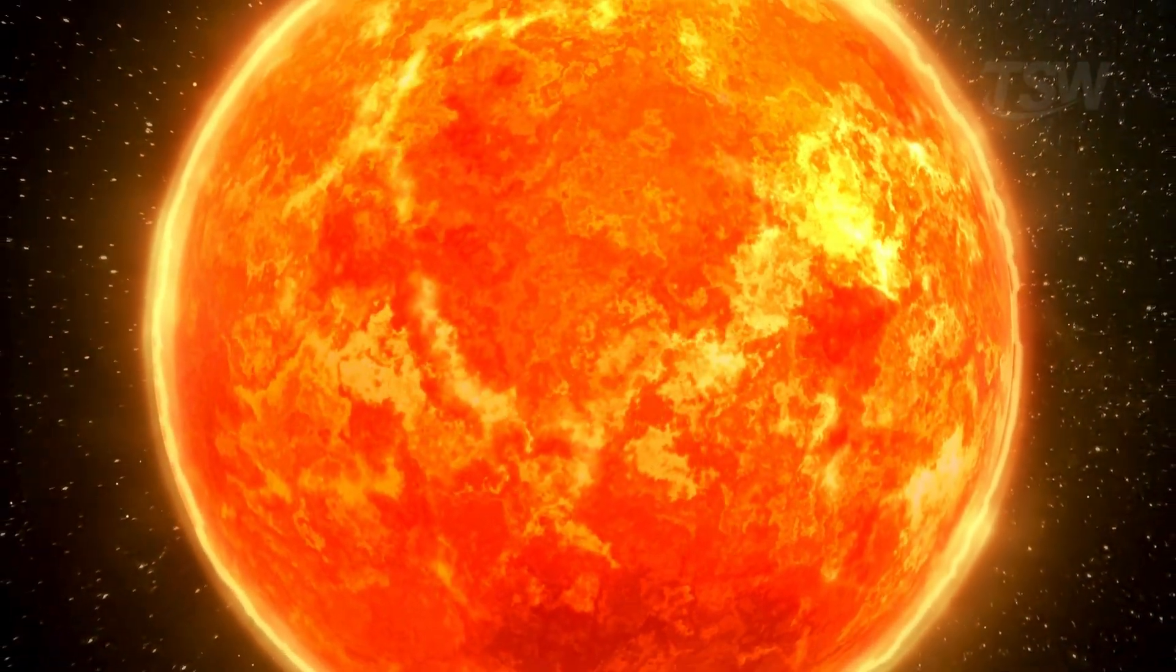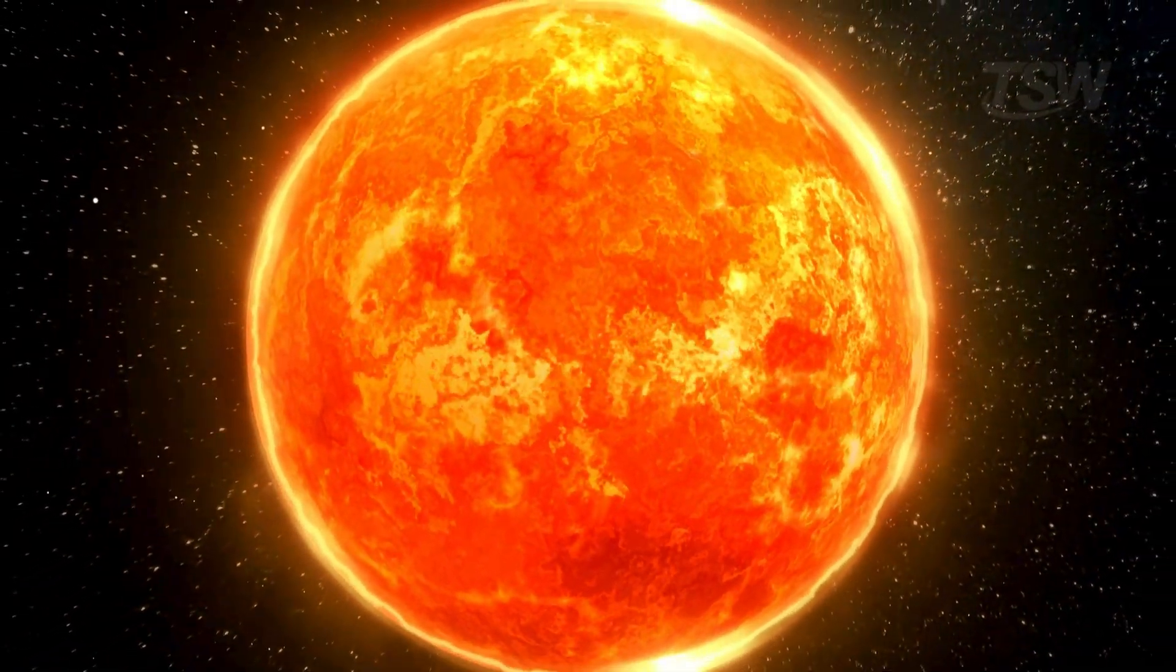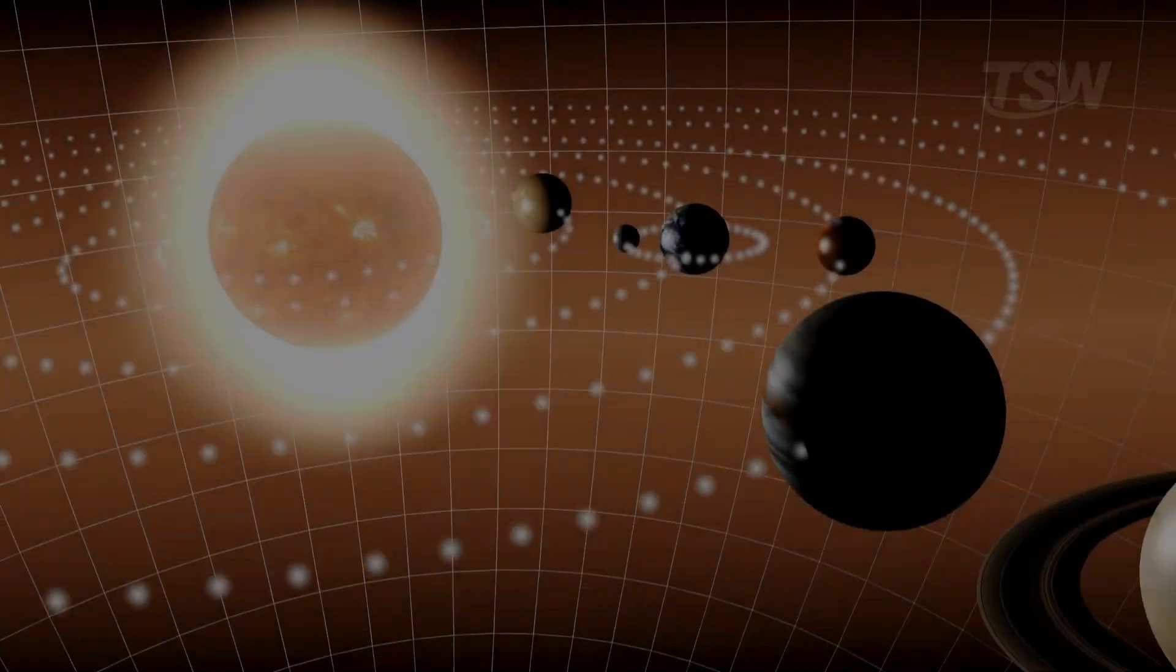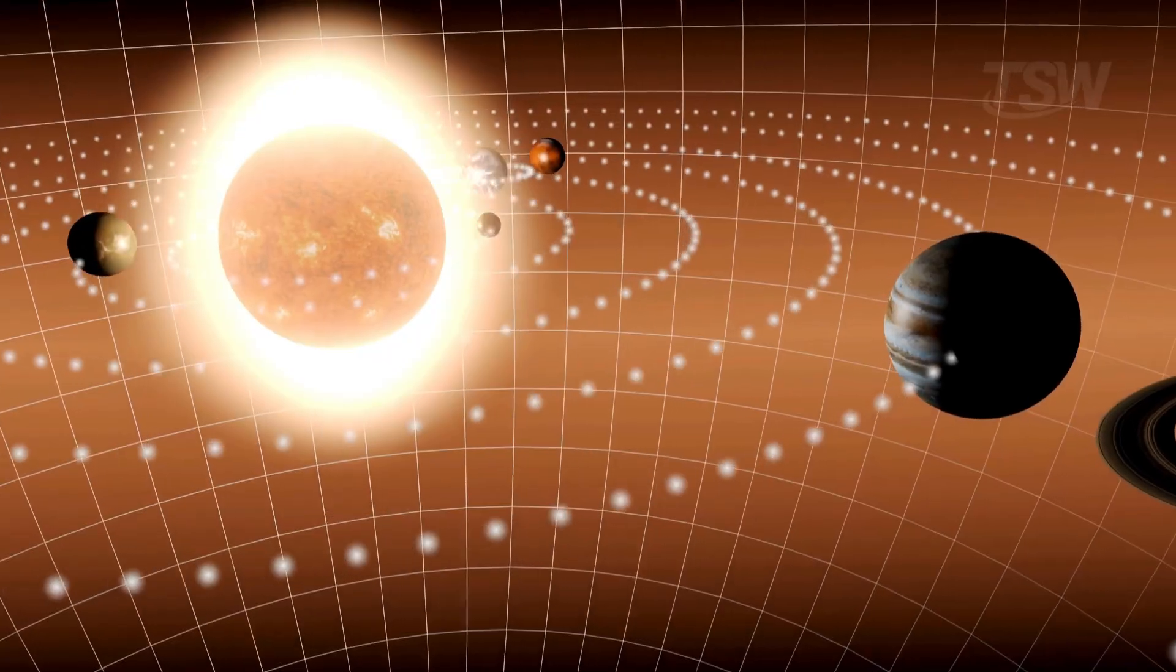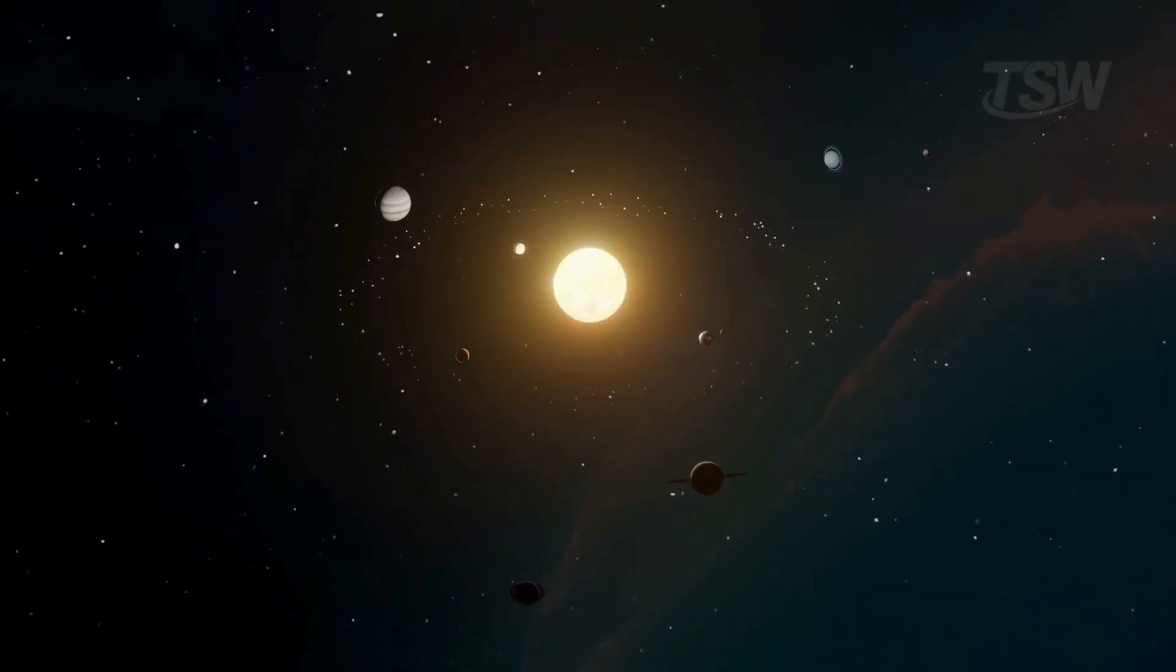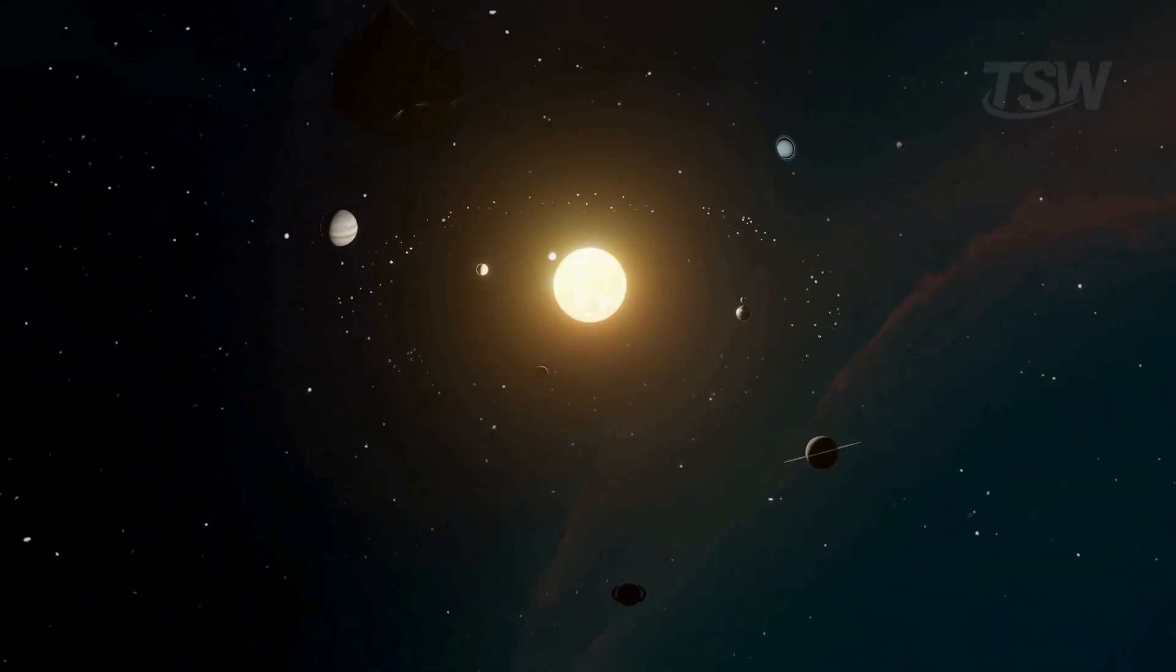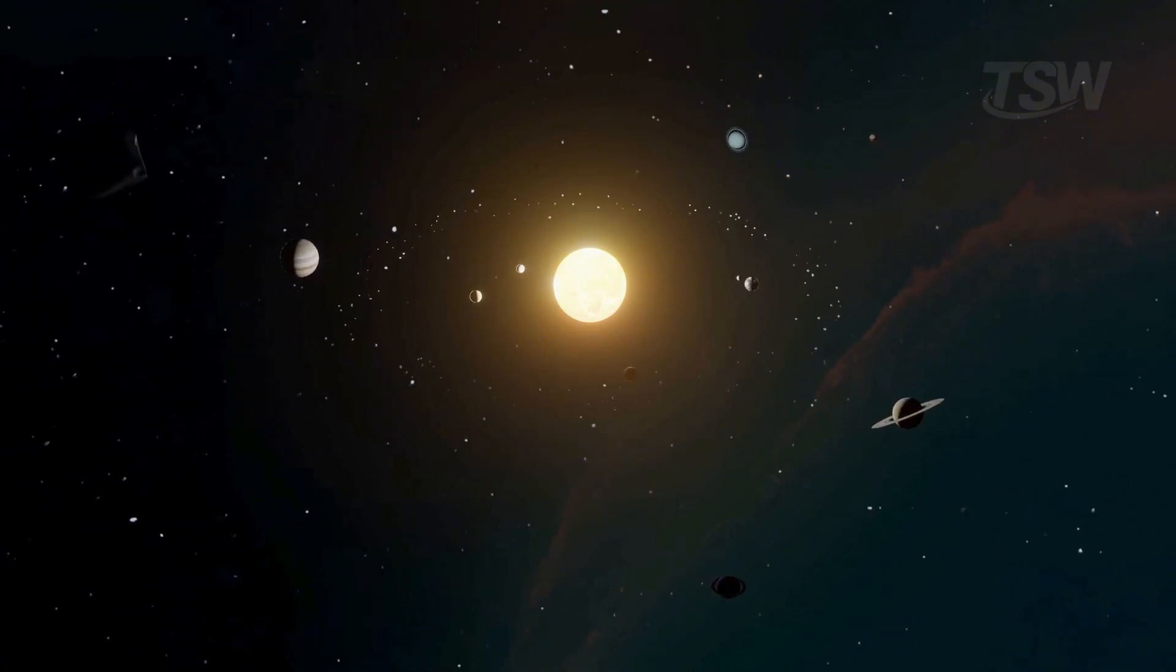The sun is like the core of a gigantic, moving gravitational field. Its pull keeps the planets bound, but all of them are being carried together through the galaxy. So, when we look at the solar system from a fixed point in space, we see something very different from the school model.